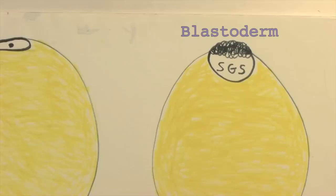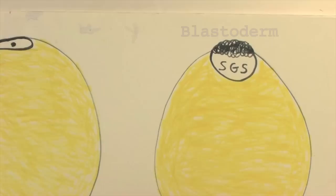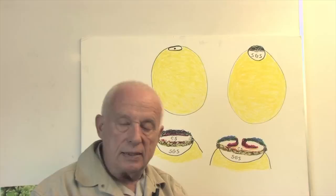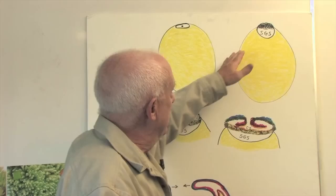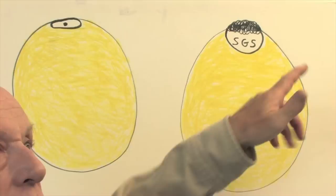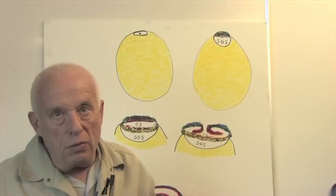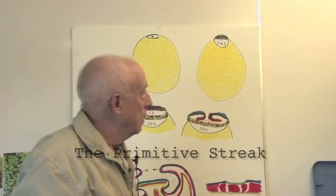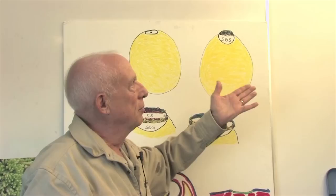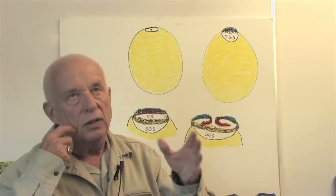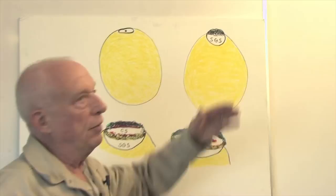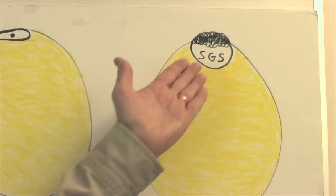Then a space forms below the blastoderm and above the yolk — this space is called the subgerminal space. What happens here in this blastoderm is that the cells start moving towards the center and form a mountain. The mountain is called the primitive streak. This is what some people call the chick blastula. It's not a real blastula because in a real blastula the cavity is within the cells; here the cavity is below the embryo proper. But still, some people call this a blastula.